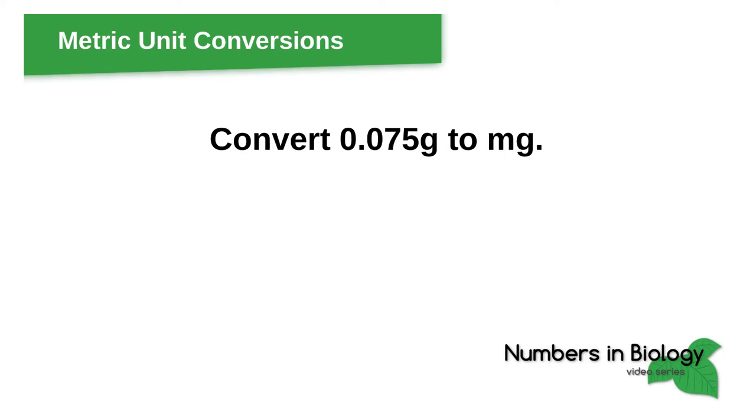Time's up. In this case, we're going from grams to milligrams. Conveniently, they are in the right order, so we will be moving the decimal point to the right. 0.075, moving 1, 2, 3 decimal places. So the answer is 75 milligrams. Next question.